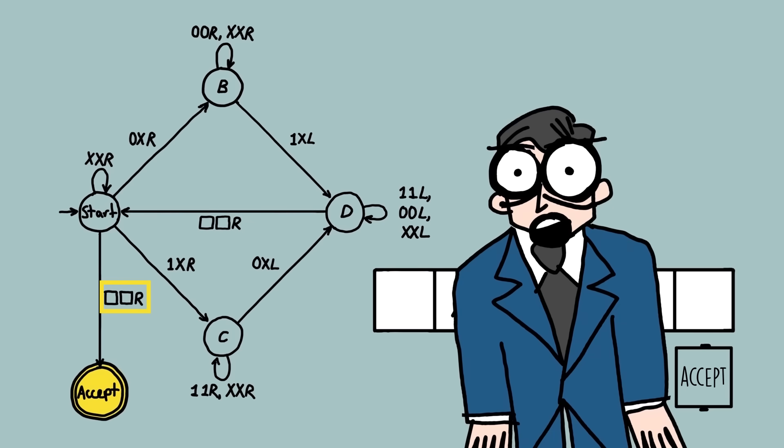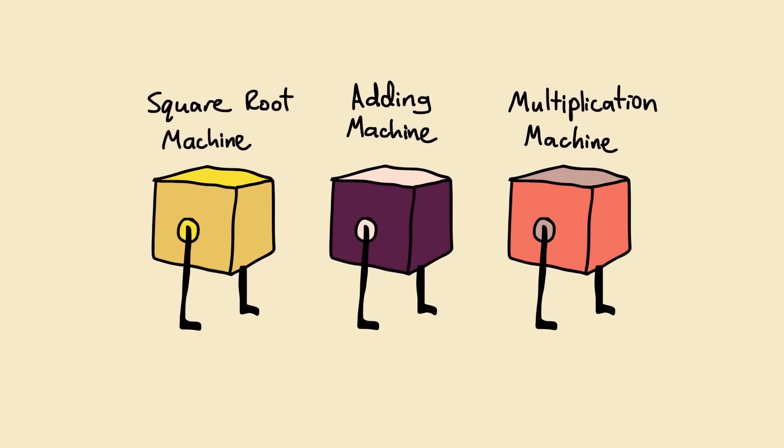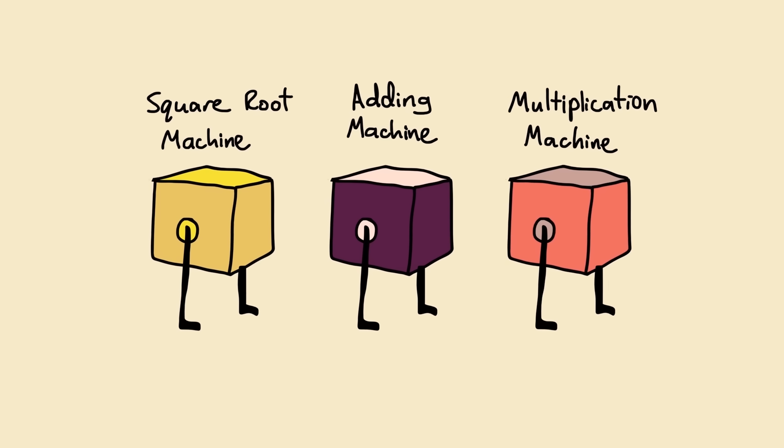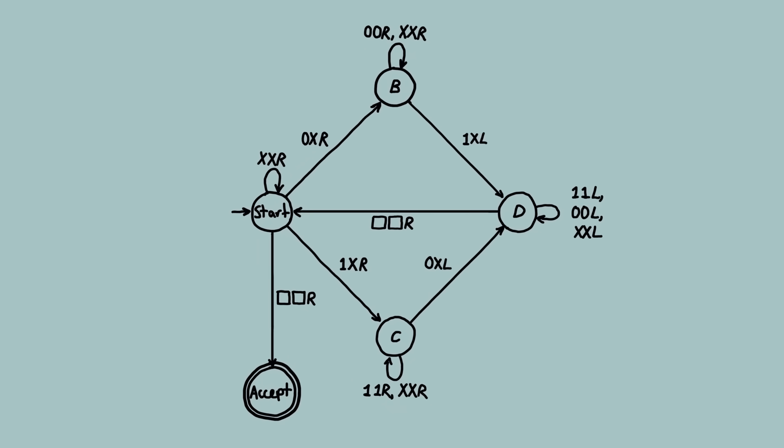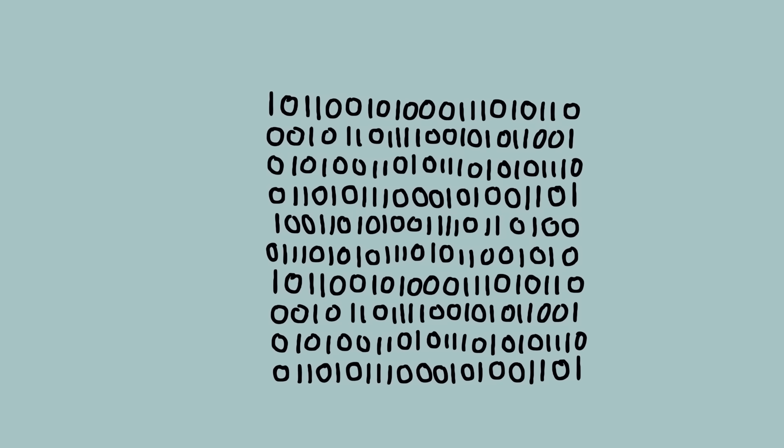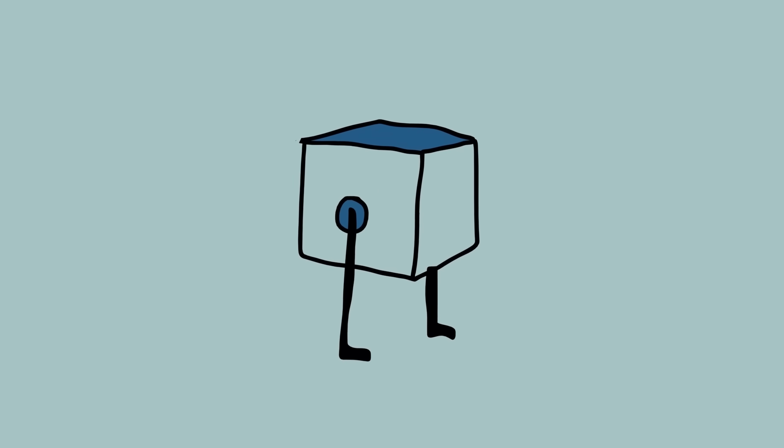But here, Turing had another incredible insight. See, at the moment, you would need to build different machines to do different tasks. A machine to calculate square roots would need to be built with a different internal state table than a machine to do addition. But Turing realized that any internal state table could be encoded into a list of ones and zeros. In this way, we could feed the instructions as well as the problem into a new machine. And that machine could perform that set of instructions.